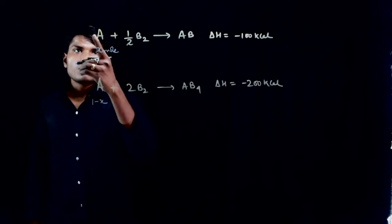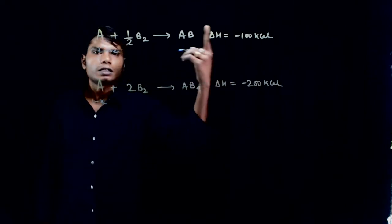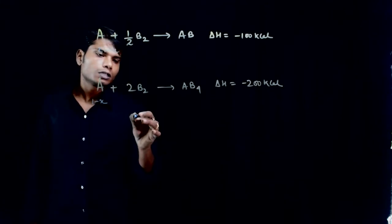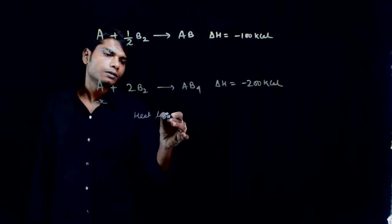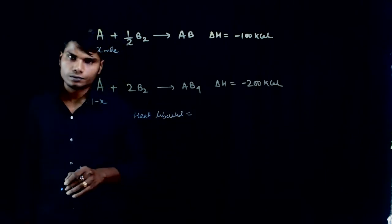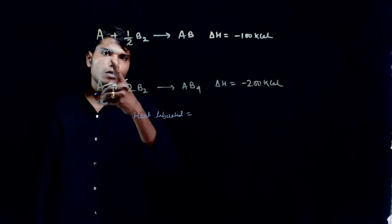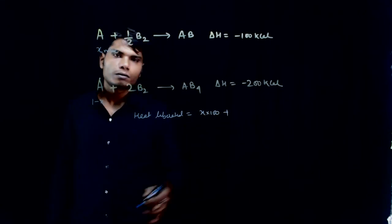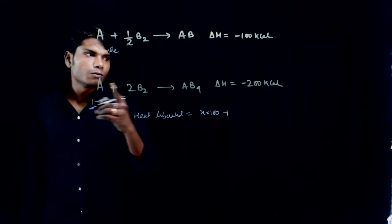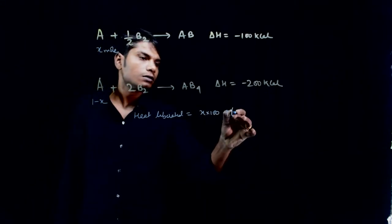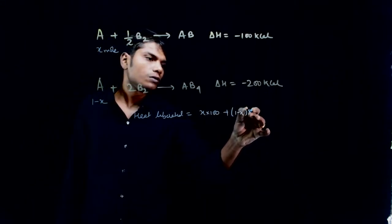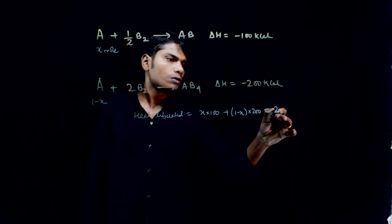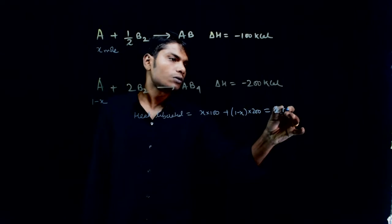So for one mole of A, we will have 100 kilocalorie. So for x mole how much will we get? We can write the heat liberated equation. So one mole gives 100, x mole gives x into 100 plus one mole gives 200, so one minus x gives into 200. This equals, the question says 140.